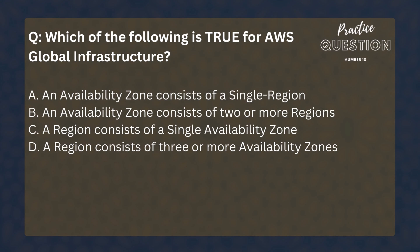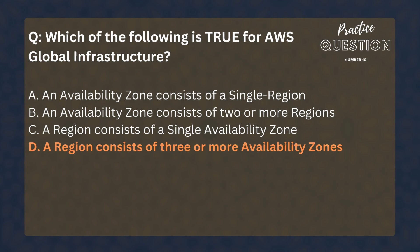Which of the following is true for AWS Global Infrastructure? Options: An availability zone consists of a single region; an availability zone consists of two or more regions; a region consists of a single availability zone; a region consists of three or more availability zones. According to what has been discussed in Section 3, a region consists of three or more availability zones.